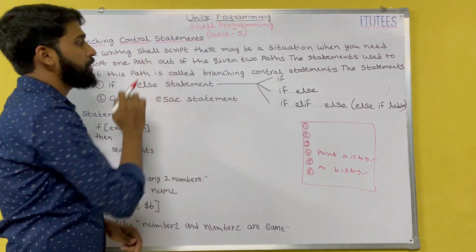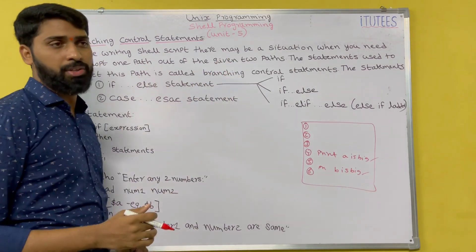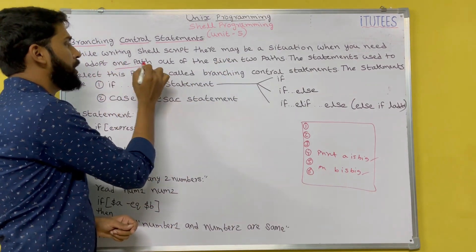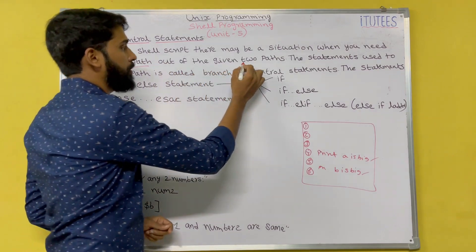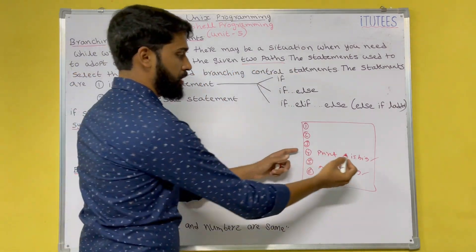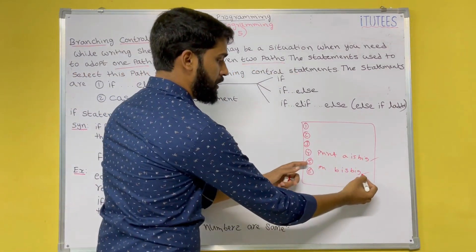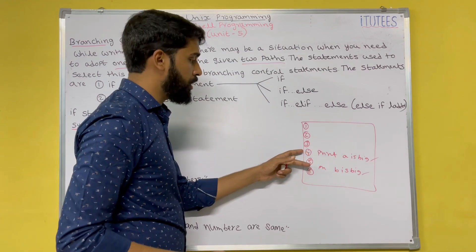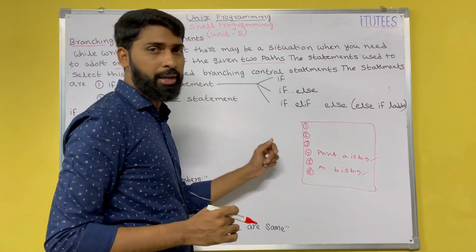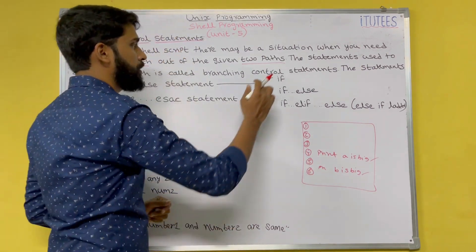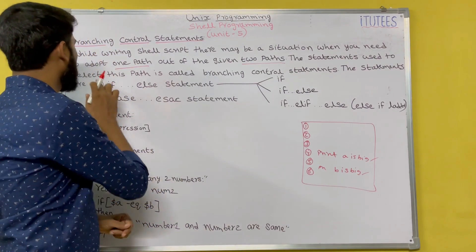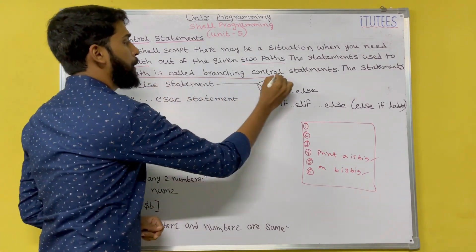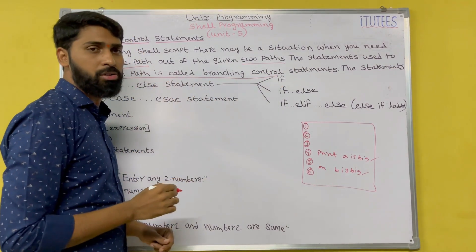While writing the shell script, there may be a situation when you need to adopt one path out of two given paths. In these two paths, you are going to execute only one path at a time. The statements used to select this path are called branching control statements.